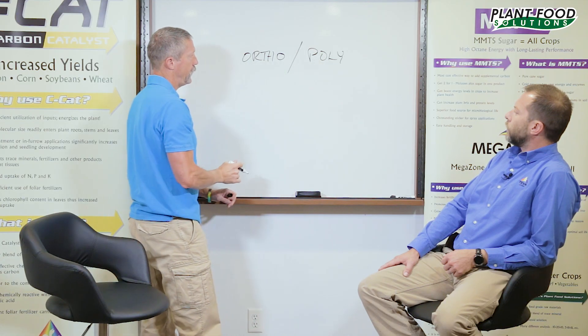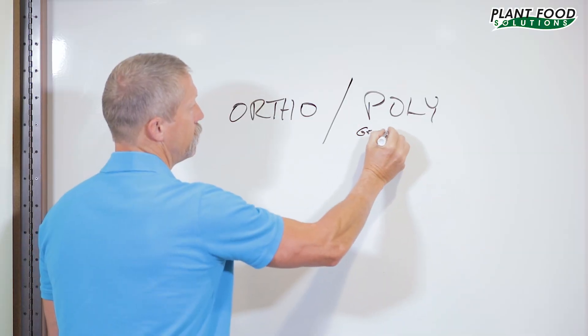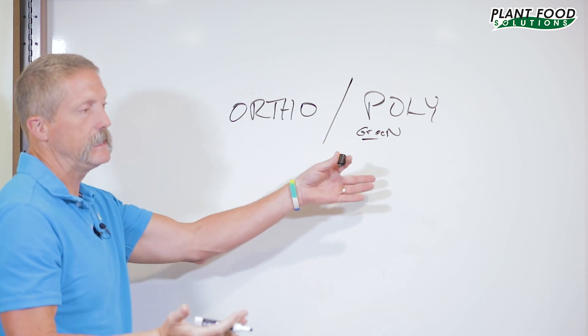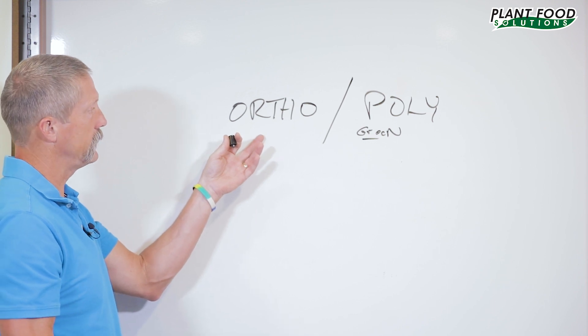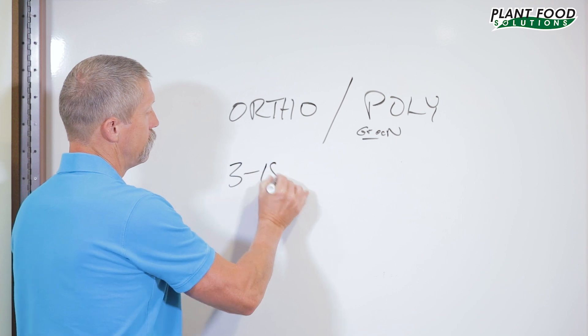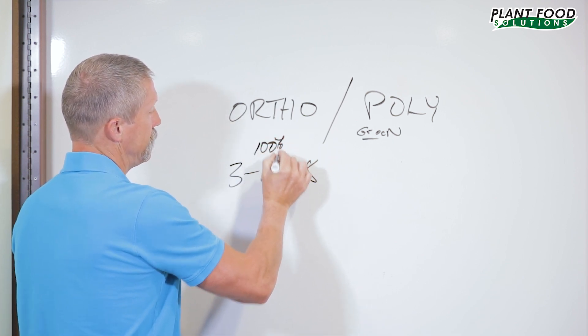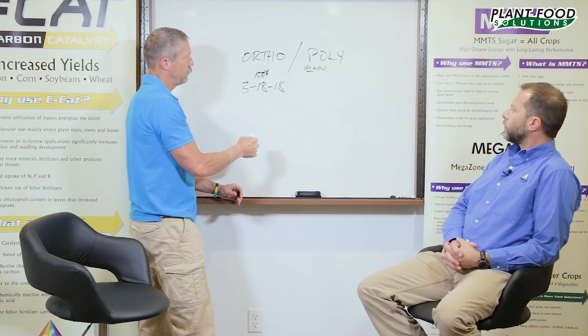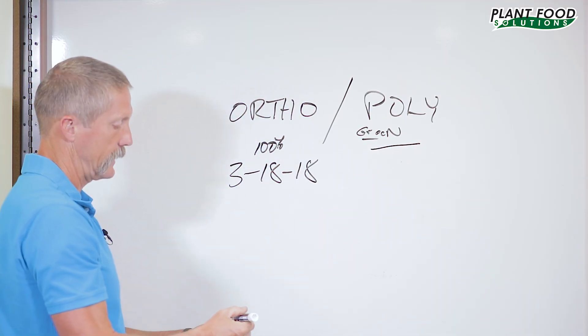Those are the two forms that you have. Poly is normally a green in color. You can kind of tell if you're getting poly because if your liquid comes to you and it's got a green tint to it, it's going to be partially polyphosphate. Ortho is what the plant takes up. In a 3-18-18, you're getting 100% orthophosphate. It's all 100% available to the plant.